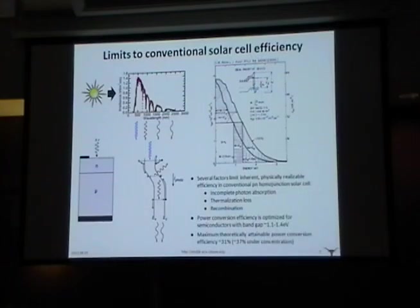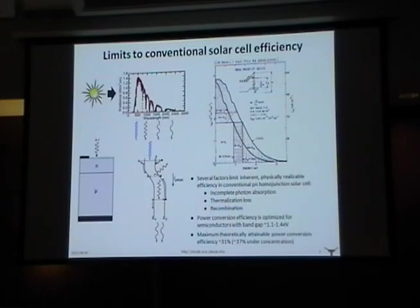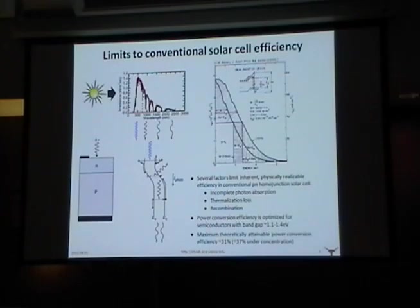Since ultimately what we want to do is improve the efficiency of solar cells, a good starting point is to look at the various factors that actually limit efficiency. You have broad-spectrum sunlight incident on your solar cell — say a semiconductor PN junction. Photons with energies larger than the bandgap can be absorbed; photons with lower energy are not absorbed. What I've shown here is a plot from the paper by Charles Henry on solar cell efficiency.